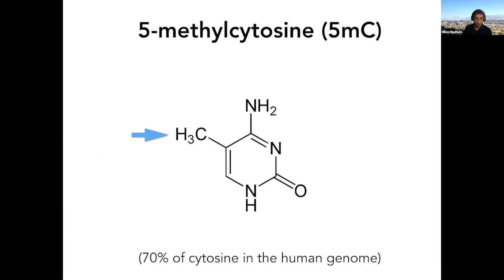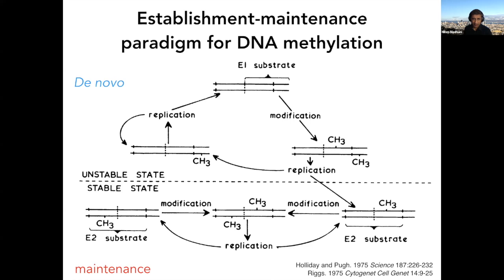When I talk about DNA methylation, I'm talking about 5-methylcytosine. This is actually the majority of cytosine in the human genome — 70% of your DNA has methyl-C in it. It was proposed in the mid-70s by Holiday, Pugh, and Arthur Riggs that DNA methylation in symmetric sequence context might explain development.